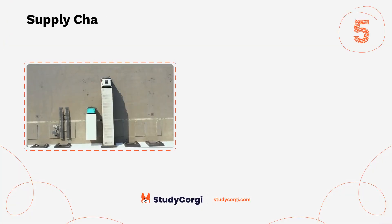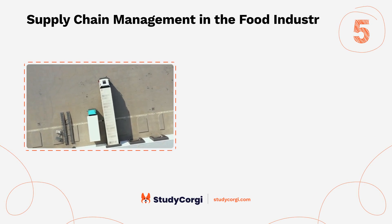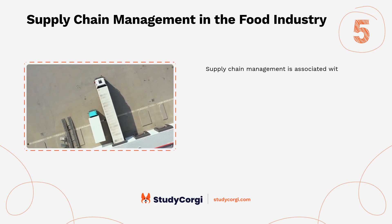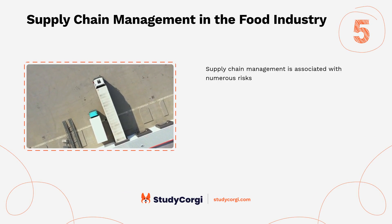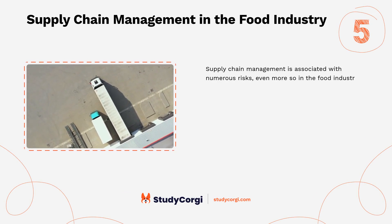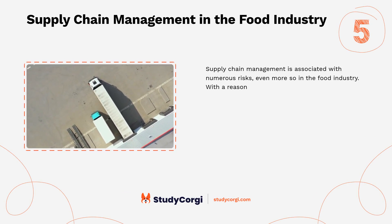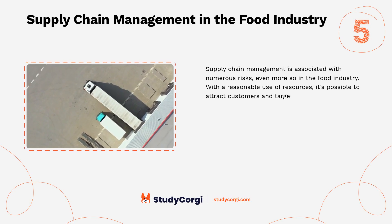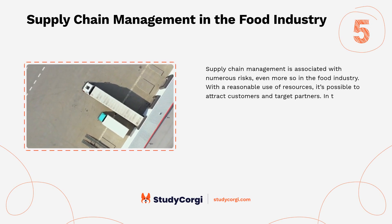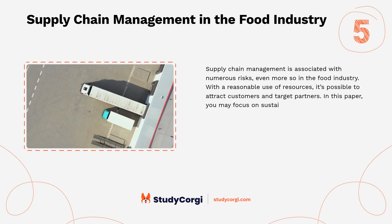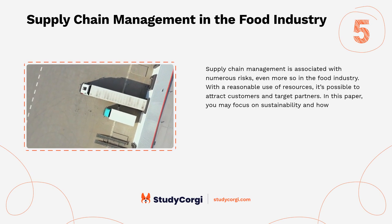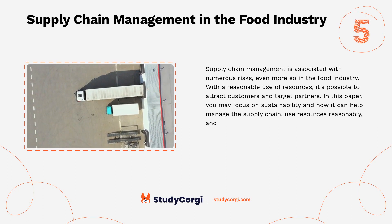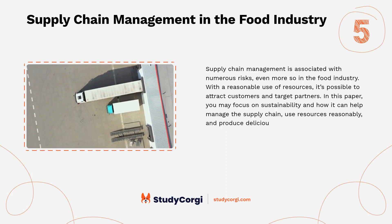Supply chain management in the food industry. Supply chain management is associated with numerous risks, even more so in the food industry. With reasonable use of resources, it's possible to attract customers and target partners. In this paper you may focus on sustainability and how it can help manage the supply chain, use resources reasonably, and produce delicious, healthy foods.